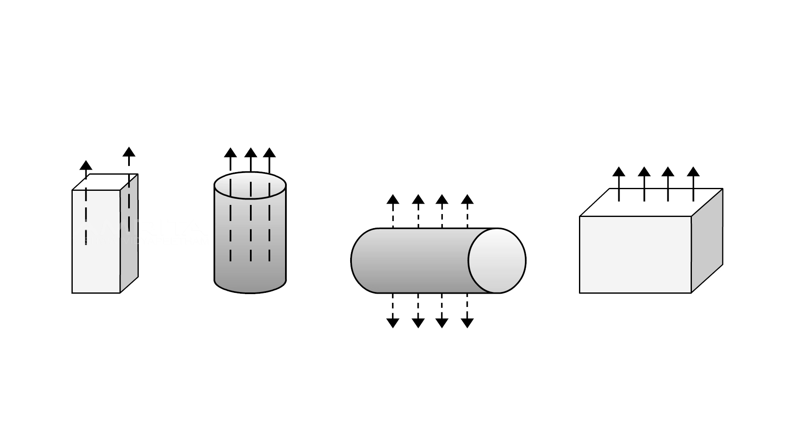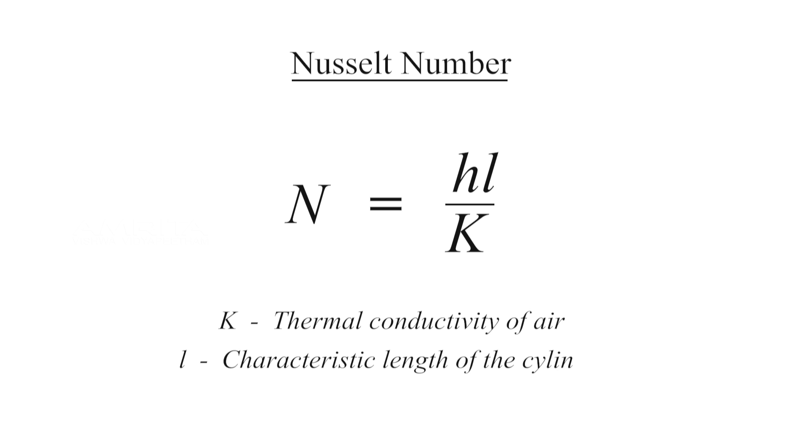From the value of h we can also determine Nusselt number N, which is N = hl/K, where K is the thermal conductivity of air and l is the characteristic length of the cylinder.